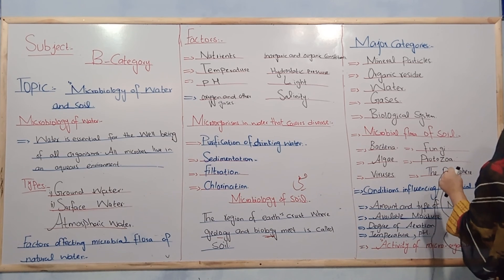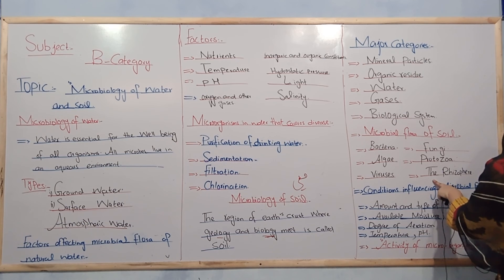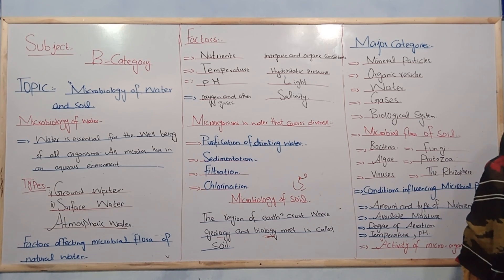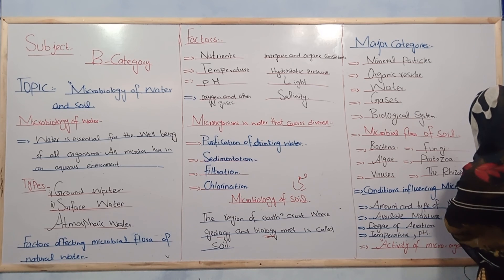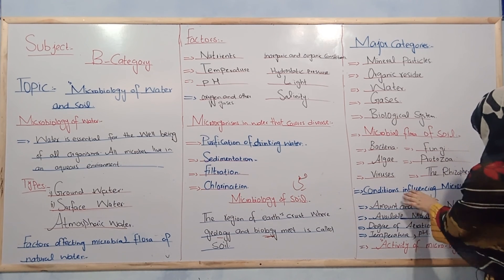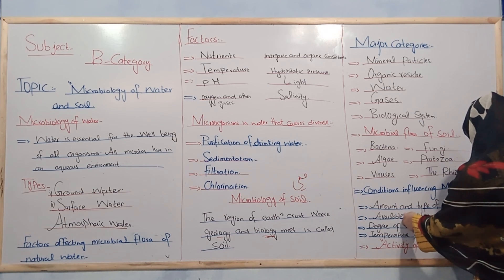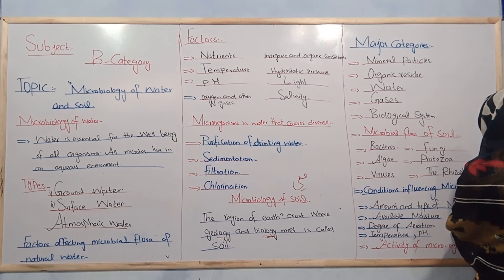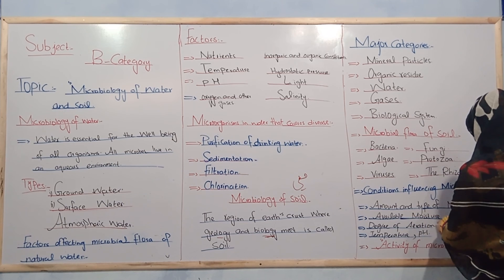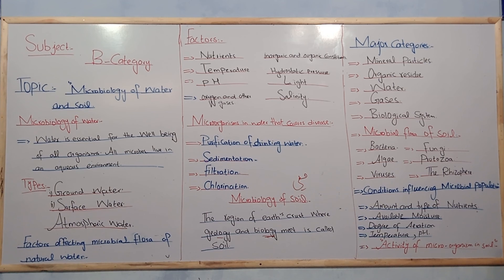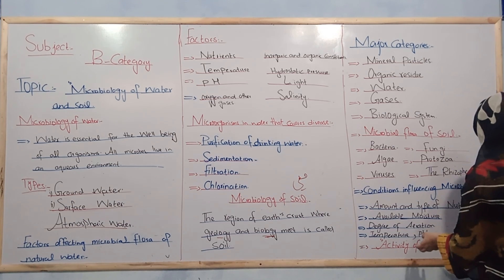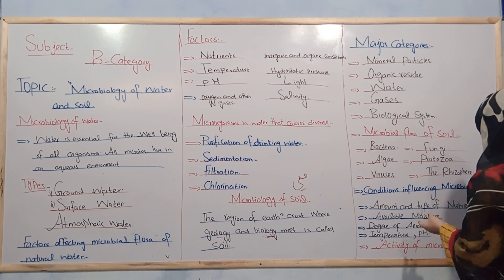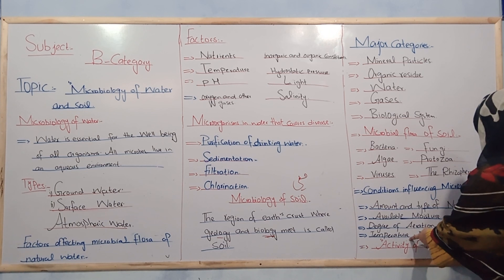The rhizosphere is a region around plant roots where the microbial population is considerably higher compared to root-free soil. Conditions affecting the microbial population in soil include the amount and type of nutrients, available moisture, degree of aeration — which means exposure to air — temperature, and pH level.